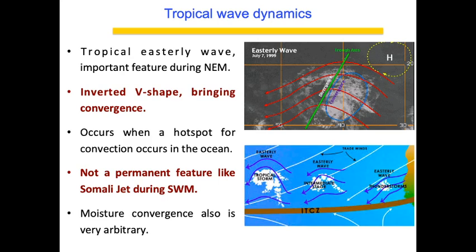A tropical easterly wave in the Arabian Sea is not conducive for Northeast monsoon because it would push any system towards Somalia. The wave must form in the Bay of Bengal, so the convective hot spot must occur there. Unlike Rossby waves or Kelvin waves — which have very clean signatures and occur year-round — tropical easterly waves are directly tied to convection. The ITCZ, SST (sea surface temperature), and other conditions must all come together for the wave to mature into a clear inverted-V shape.